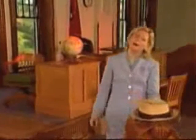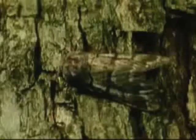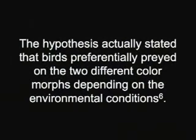Almost all science textbooks include England's peppered moth as the classic example of evolution by natural selection. The theory says that dark and light colored moths rested on tree trunks during the day and birds ate them. The hypothesis actually stated that birds preferentially preyed on the two different color morphs depending on environmental conditions. But on trees covered with a whitish-colored lichen, the light moths were able to survive because they were camouflaged. When the industrial revolution hit, pollution and dark soot reversed the effects.